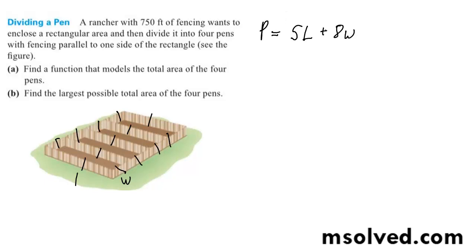So now what we can do is find the total area. Area is going to be equal to, so we've got this at 750 feet, so I'll represent this in terms of W. So W is going to be equal to 750 minus 5L all divided by 8.